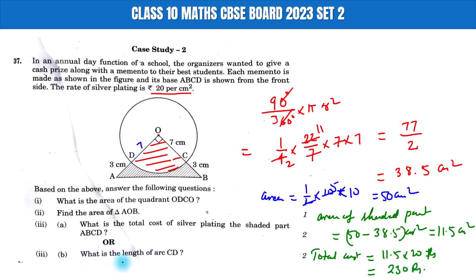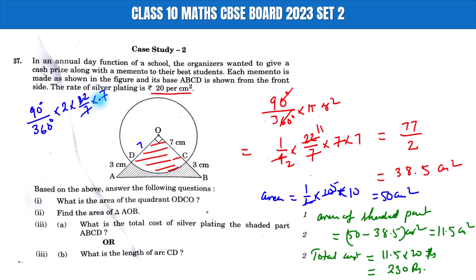The last question is: what is the length of the arc? The arc length equals 1/4 of the circumference. Calculating: 1/4 × 2 × (22/7) × 7, the 7s cancel, giving 11 centimeters. That is the answer.